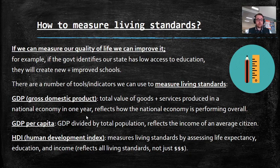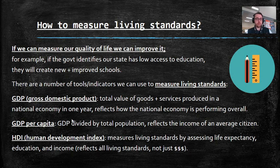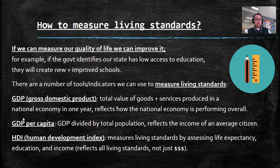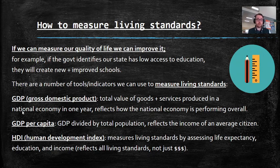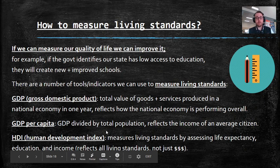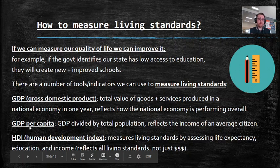GDP per capita is the total value of goods and services per person — it's your GDP of Australia divided by the total population, reflecting the income of an average citizen. Think GDP per capita, think per person — the GDP per average person in Australia. So if the GDP of Australia is $1 billion, the GDP per capita would be $1 billion divided by how many people live in Australia — so the average income per capita in Australia might be around $50,000 a year.